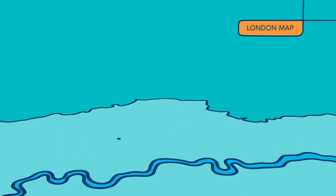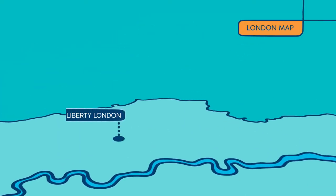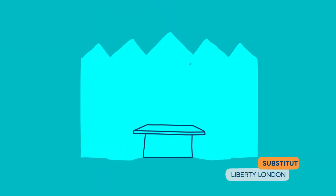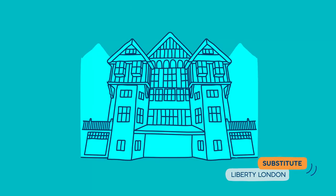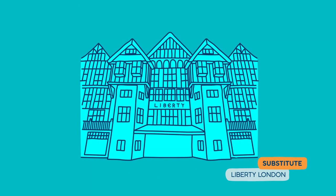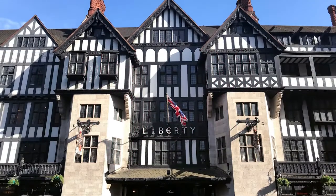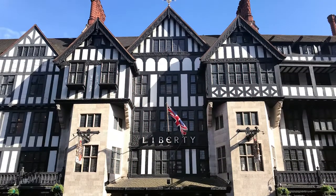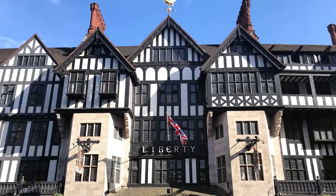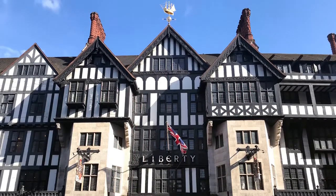For an example of the use of substitution, let's look at the Tudor-style Liberty Building, which stands out in the sea of concrete in London. Its structural components have been substituted with the timber of two broken Royal Navy ships.